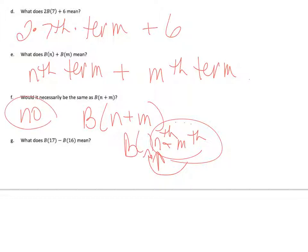And what does b of 17 minus b of 16 mean? That's your 17th term minus your 16th term.